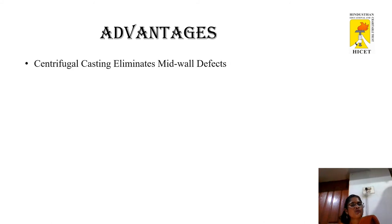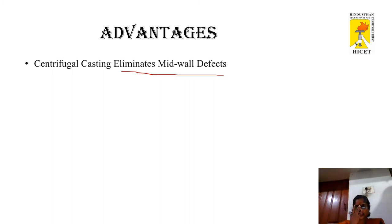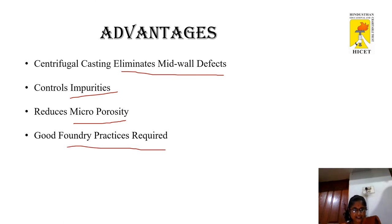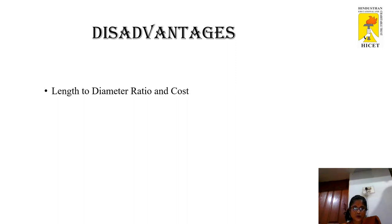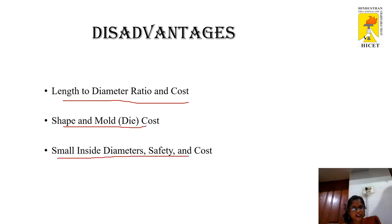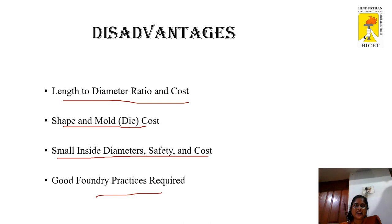The advantages of centrifugal casting include: it eliminates mid-mold defects, controls impurities, provides corrosion resistance, reduces micro-porosity, and good foundry practice is required. Disadvantages include a higher L/D ratio and cost, higher shape and mold cost, small inside diameter limitations, and safety and cost concerns. Good foundry practices are required, meaning proper training is needed.